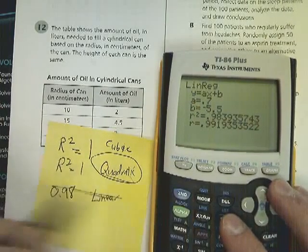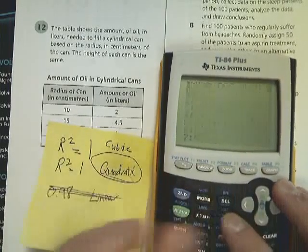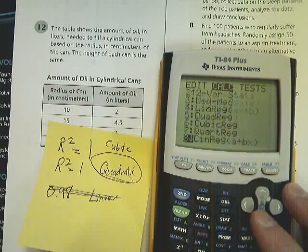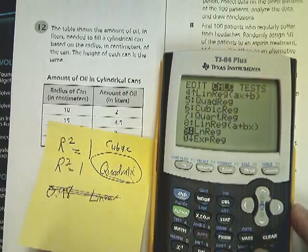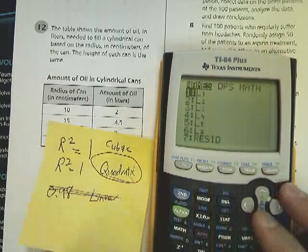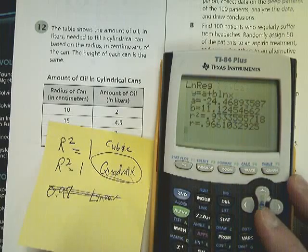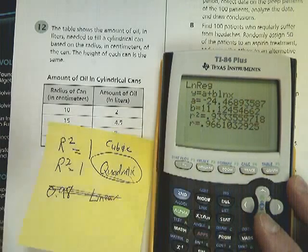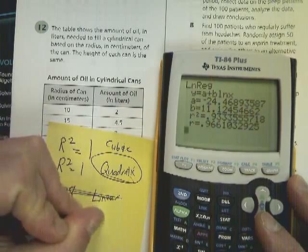Finally, let's do a logarithmic. Here's my logarithmic regression, LN, which is natural log. I'm going to go in and do L1 and L2. I'm going to regress it. See the R squared value here is .93. This is a log.